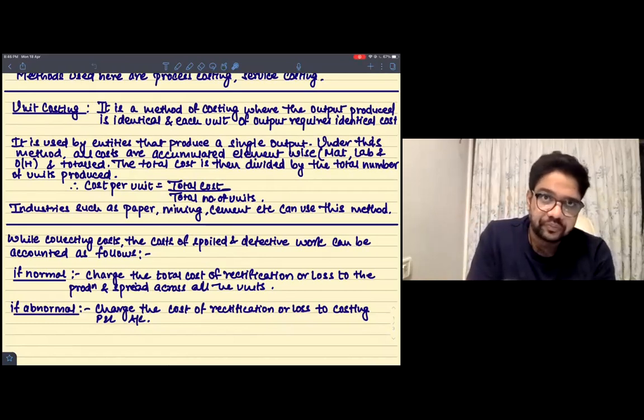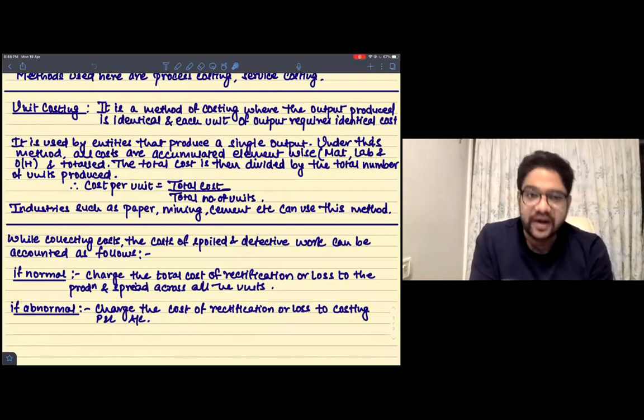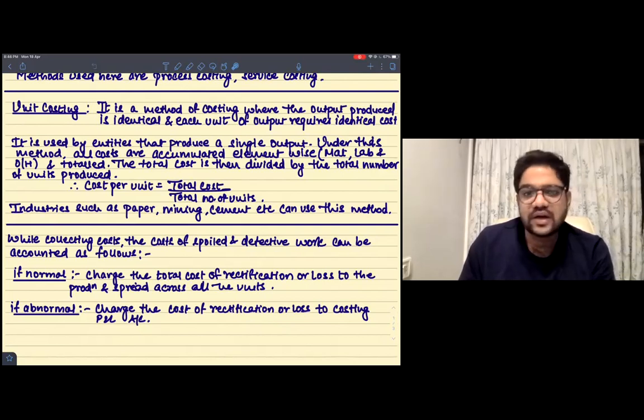So that is where you will be using process or service costing. And then we have the first part—if you are into job base, then unit costing is also one of the methods. Basically under unit costing, what happens is the output is identical and each unit of output requires identical cost. So the products are just the same. You're making one shirt ten times, so the products are the same and everything is the same, the cost is the same.